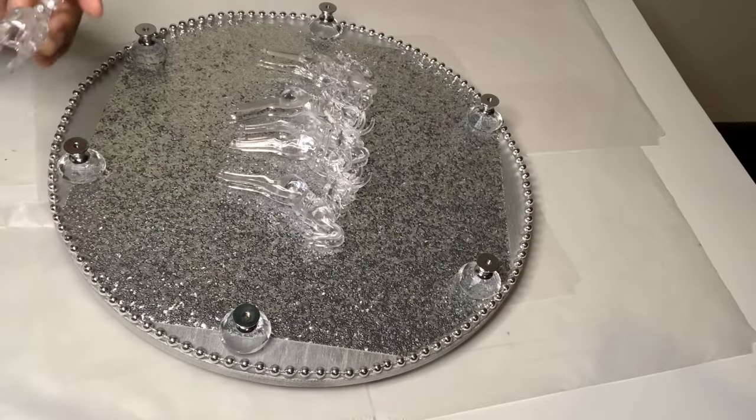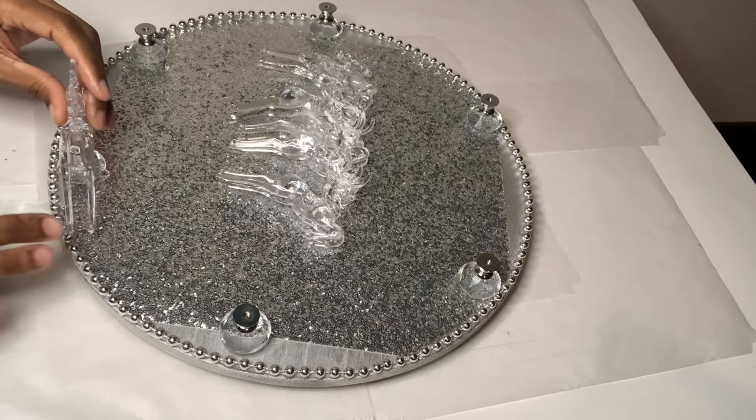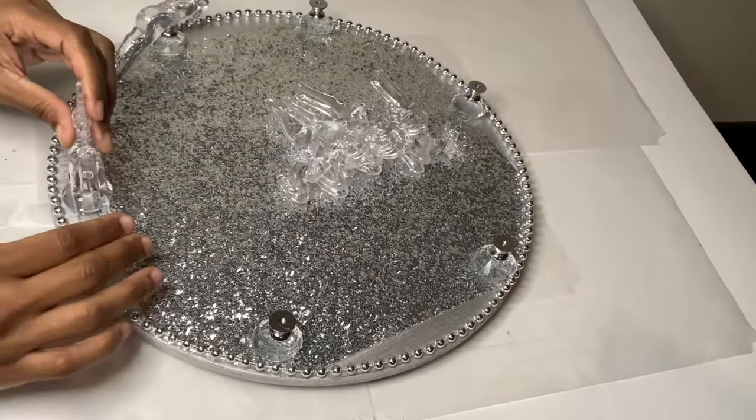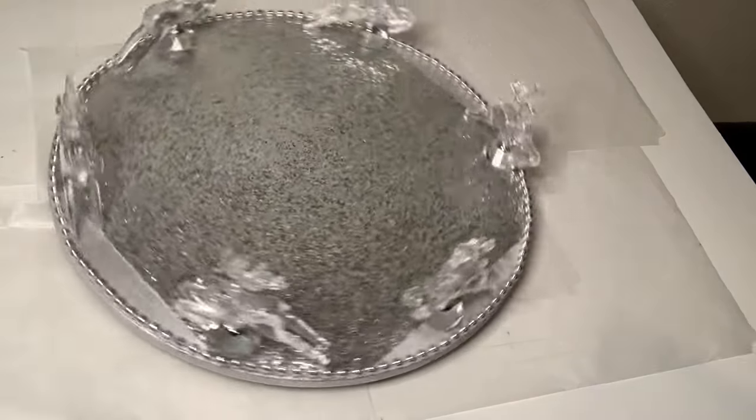Now it's time to glue my reindeers down, and I'm only placing glue on the bottom center of all the reindeers. I'm also making sure the back legs are touching the glitter paper. I'm gonna sit this to the side while I work on the top.